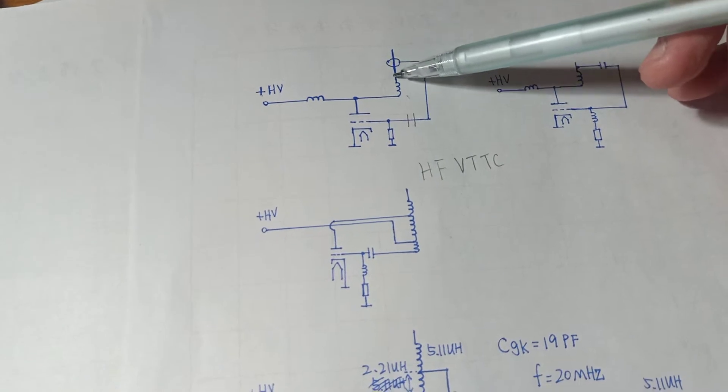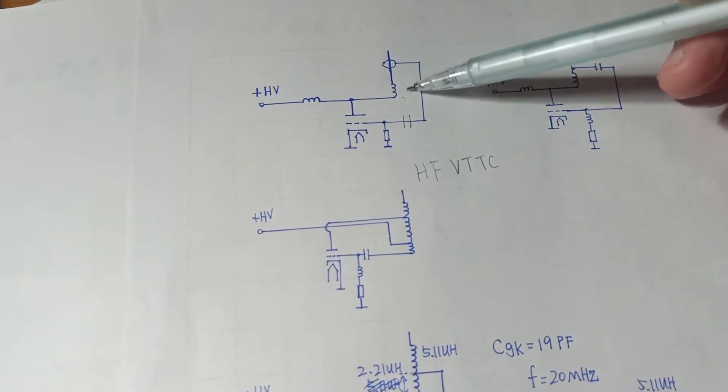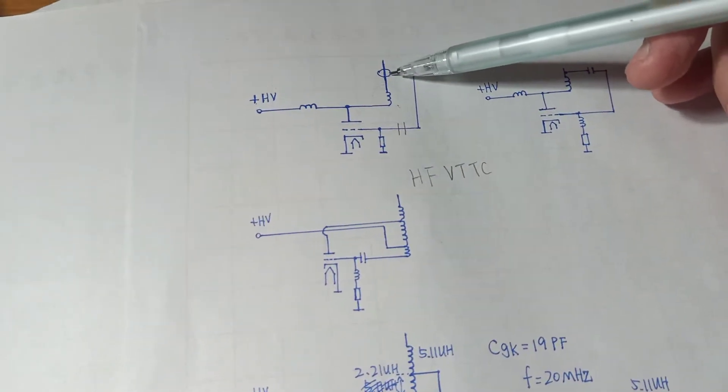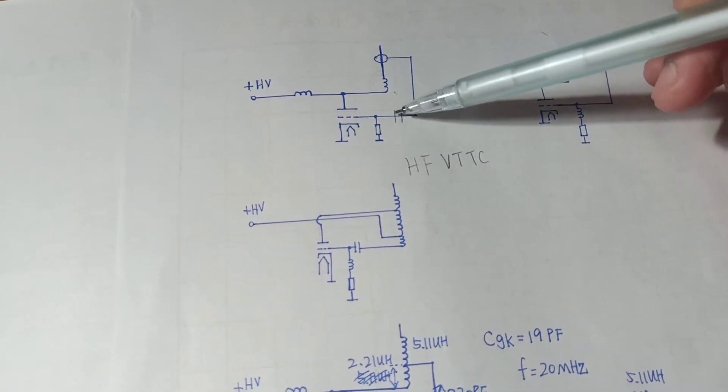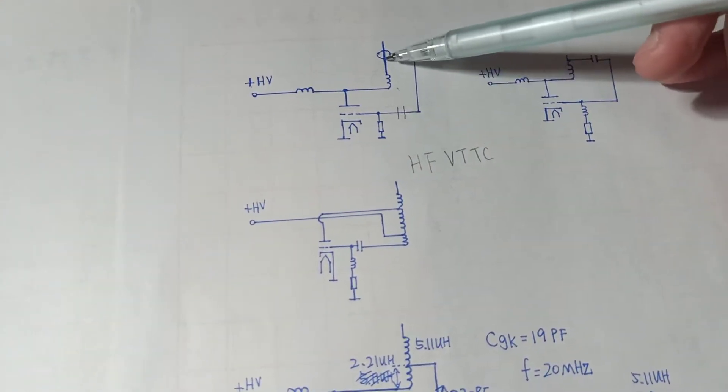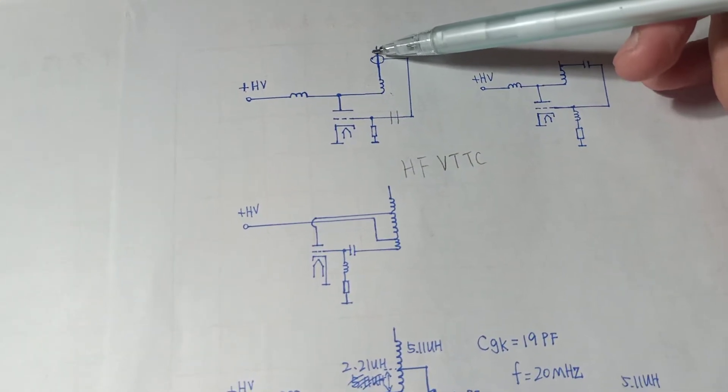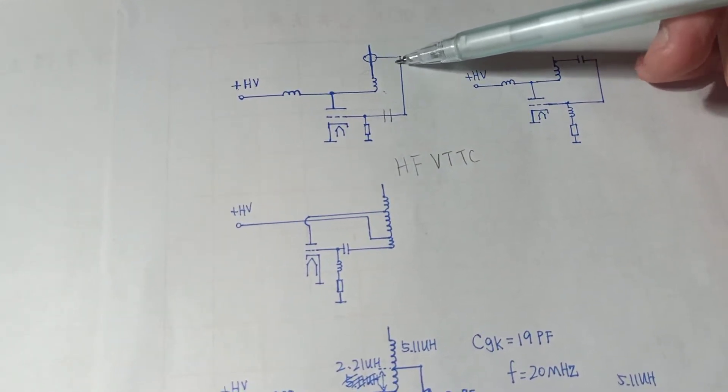Actually it's a ring around the end of the main resonant coil. The ring is connected to the tube's grid through a blocking capacitor, in case there is an arc from the breakpoint to the feedback ring.